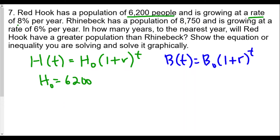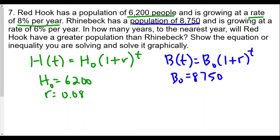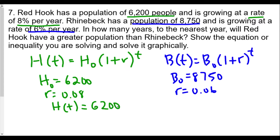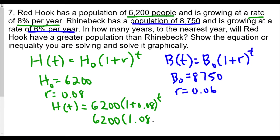The rate for Red Hook is 8% per year, so r = 0.08. That gives us h(t) = 6,200 × (1 + 0.08)^t = 6,200 × 1.08^t.